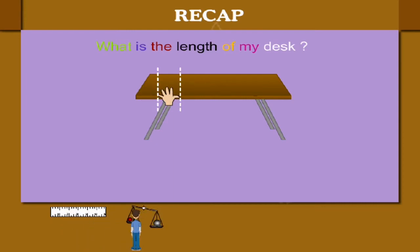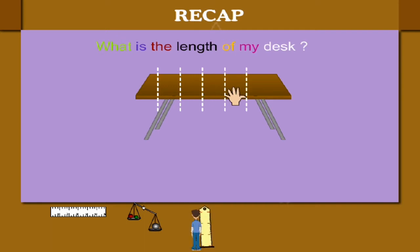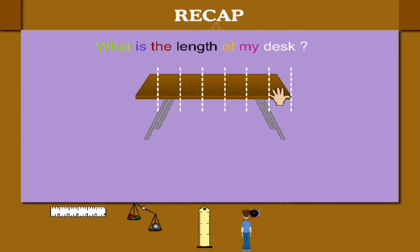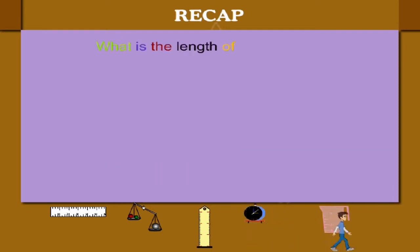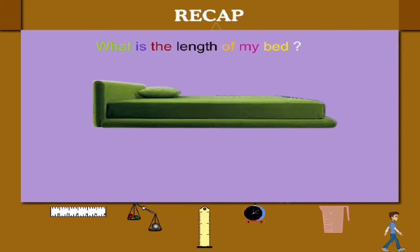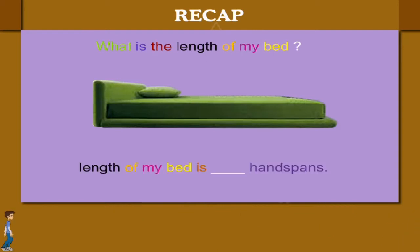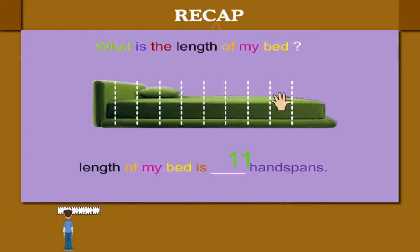1, 2, 3, 4, 5, 6, 7. So, the length of my desk is 7 handspans. What is the length of my bed? The length of my bed is 11 handspans.